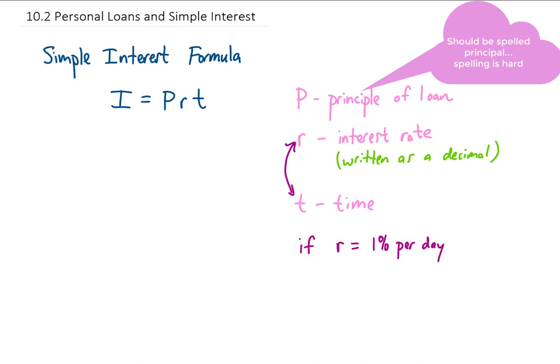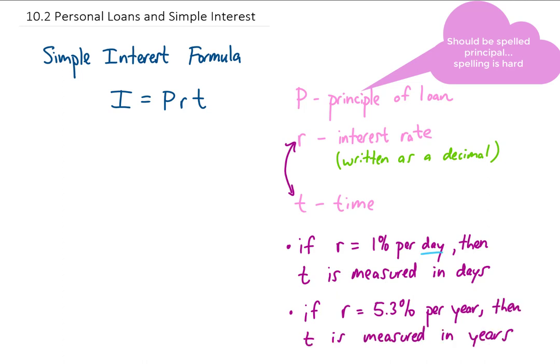How we measure time depends on how we're given our interest rate. For example, if our interest rate is 1% per day, then our time T is measured in days. More commonly, if our interest rate is given annually or per year, then our time T is also measured in years. What we say is that our time is expressed in the same period as our interest rate.